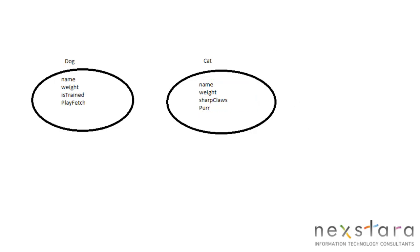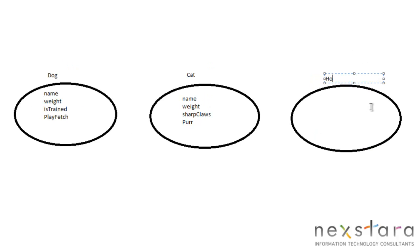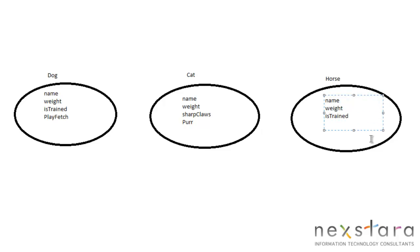Maybe we have a Horse too. Our game will have kids select a pet that they want. So Horse: you can have a name, weight, maybe is_trained also, but maybe you can gallop. Now one thing you'll notice is that name, weight, and is_trained are similar across all three of these classes.